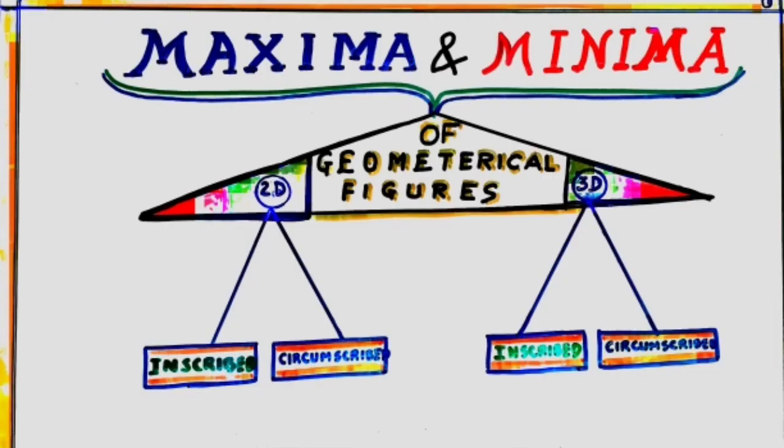Hello friends, I have come up with my notes. It is maxima and minima of geometrical figures. 2D, 3D. Inscribed figures, circumscribed figures. Inscribed means under banai huye. Circumscribed means bahar banai huye. So in 3D also, same is the case. Inscribed and circumscribed.